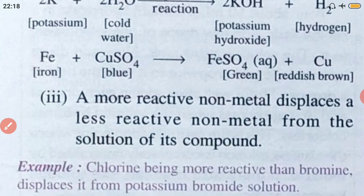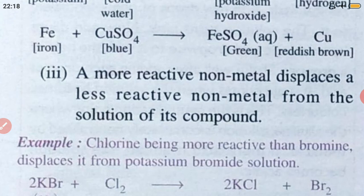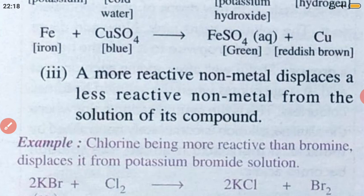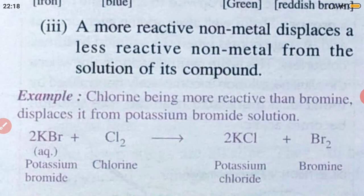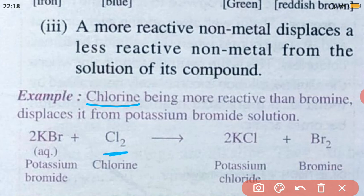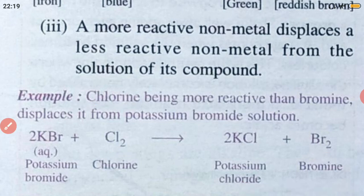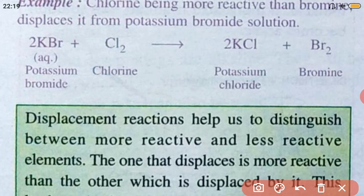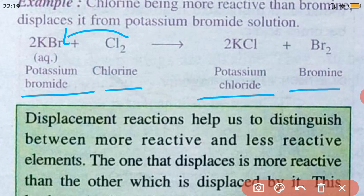The next example: a more reactive non-metal displaces a less reactive non-metal. Non-metals can also get displaced. Chlorine, being more reactive than bromine, displaces it from potassium bromide solution. In the reaction, potassium bromide plus chlorine — chlorine displaces bromine and takes its place, forming potassium chloride while bromine gets displaced.